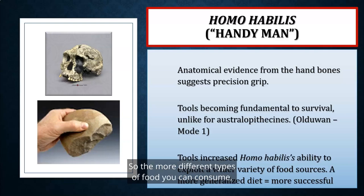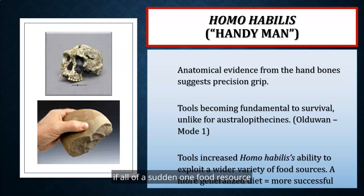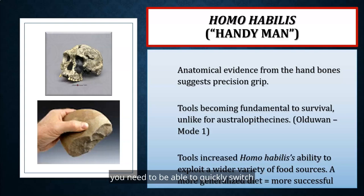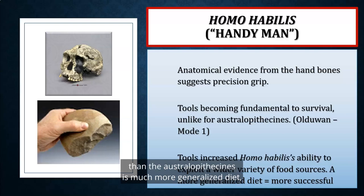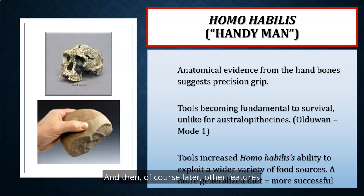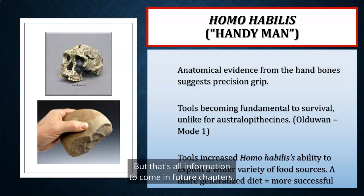A more generalized diet is more successful — the more different types of food you can consume, the more adaptable you are. If one food resource becomes unavailable, you need to quickly switch to another. This adaptability, along with stone tool use, is hypothesized as the main reason genus Homo was more adaptable than the Australopithecines. Later features like control of fire, migration out of Africa, and symbolic expression will be covered in future chapters.